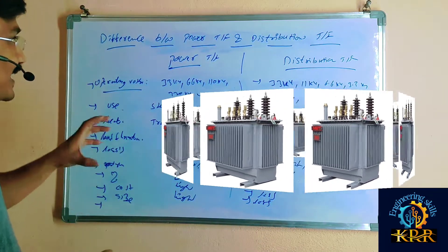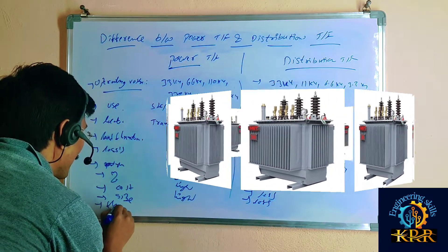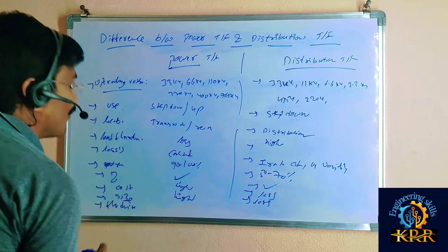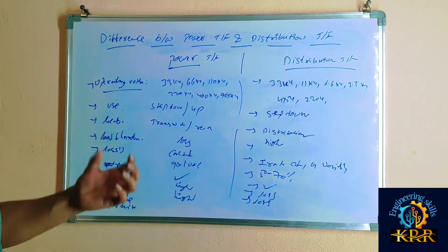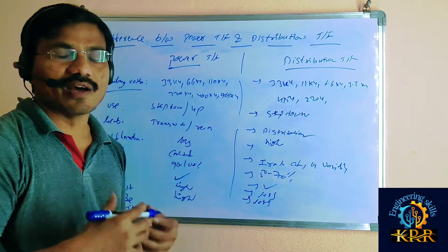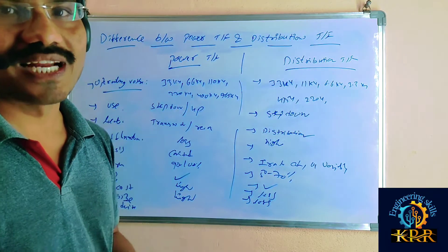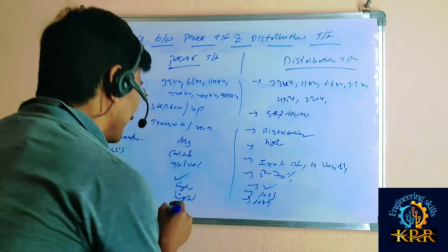The flux density of the power transformer is high, while the flux density of the distribution transformer is less.